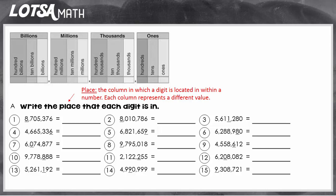It says write the place, and a place is the column in which a digit is located within that number, and each column represents a different value.